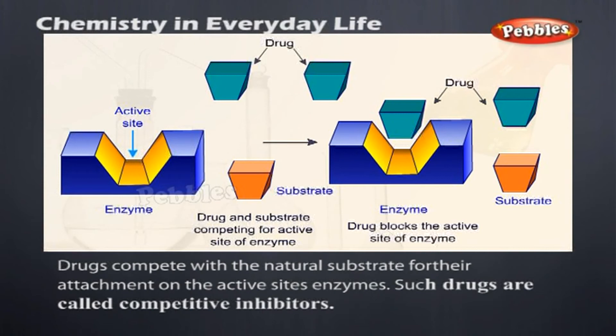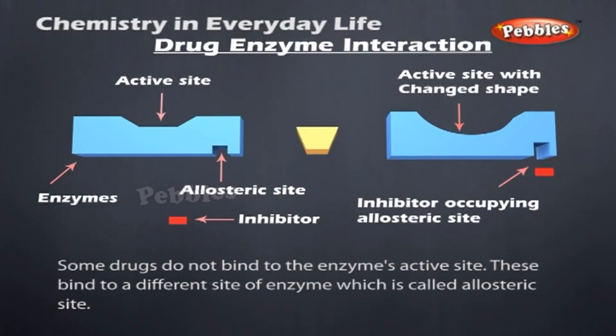Drugs compete with the natural substrate for their attachment on the active sites of enzymes. Such drugs are called competitive inhibitors. Some drugs do not bind to the enzyme's active site; these bind to a different site of enzyme, which is called allosteric site.